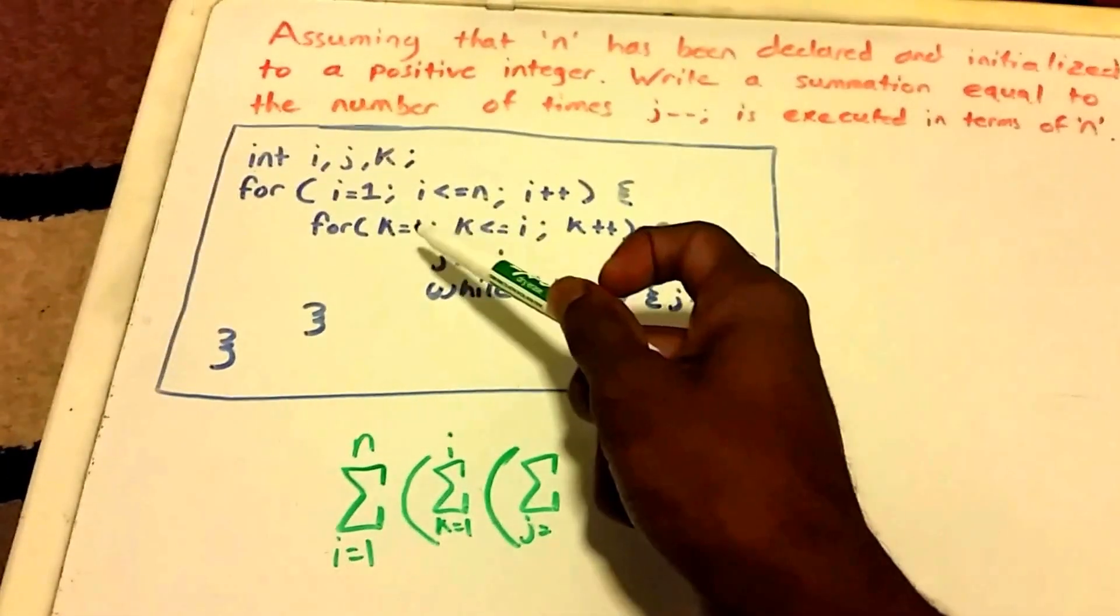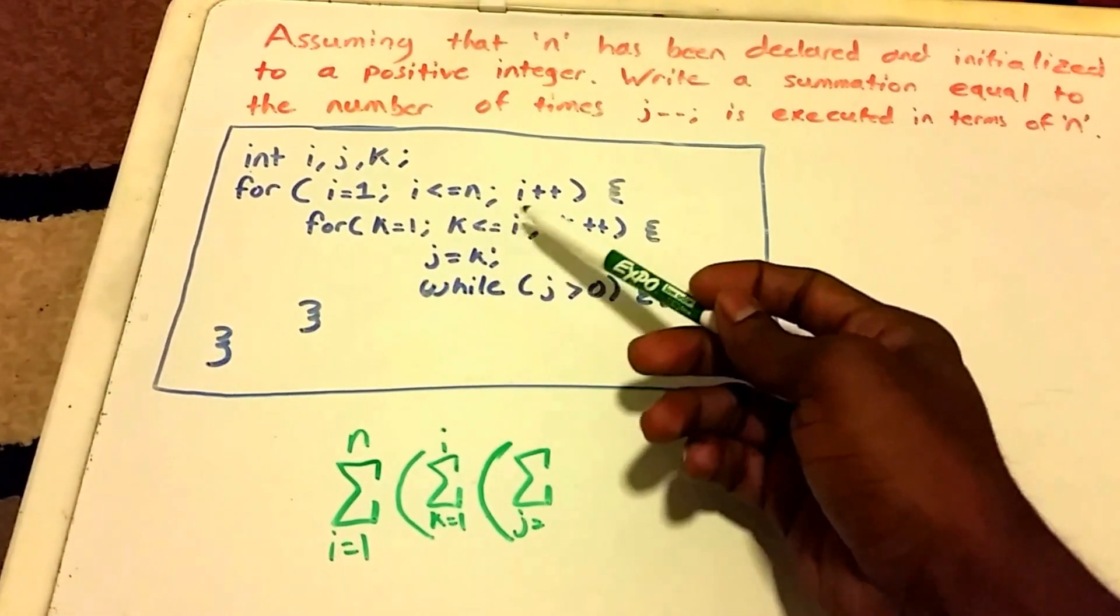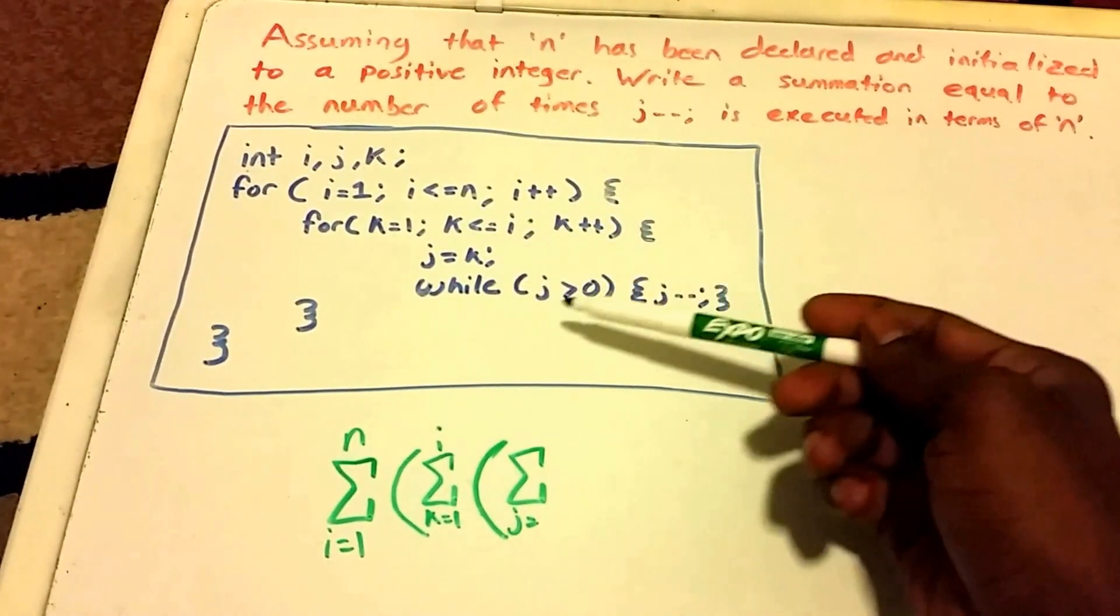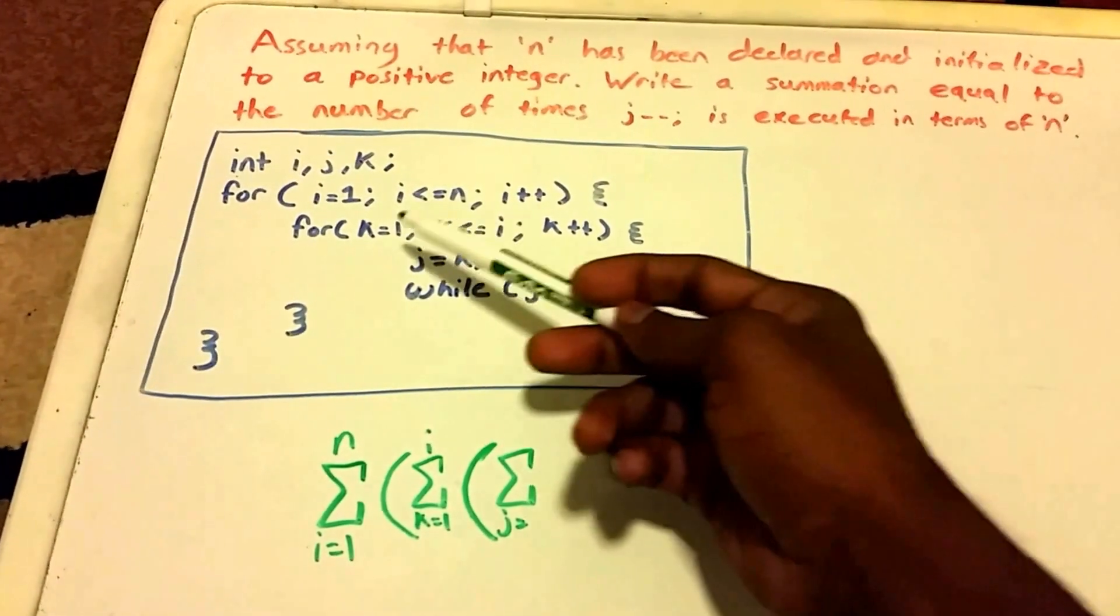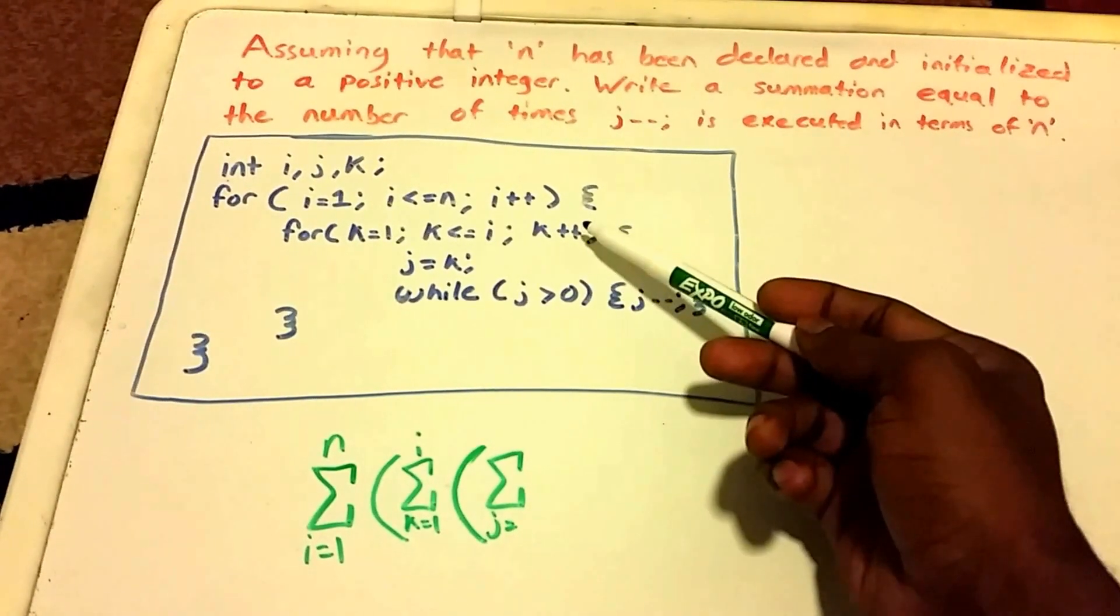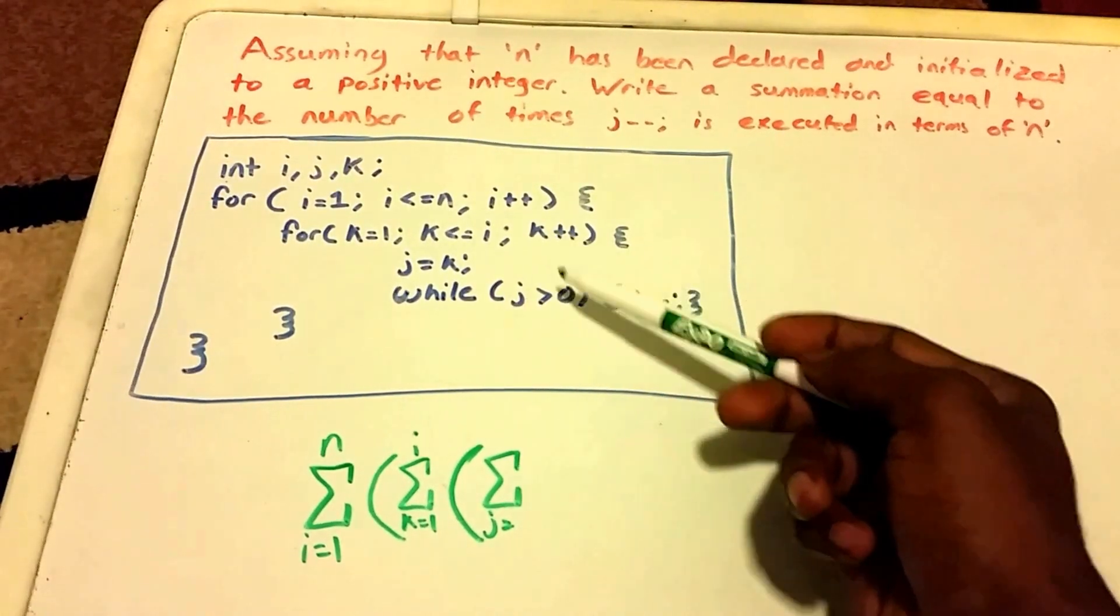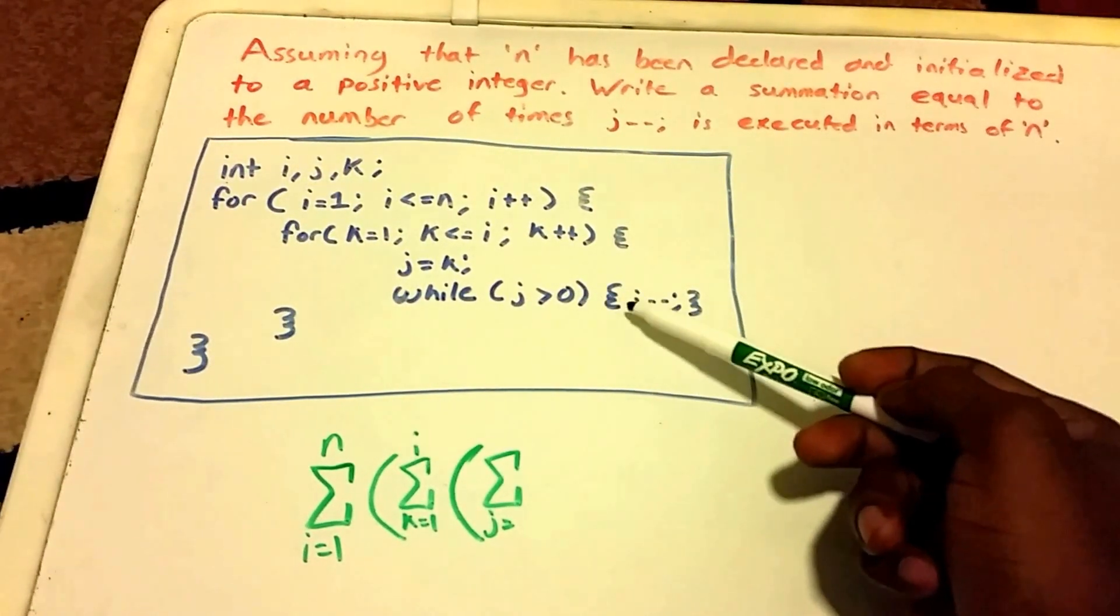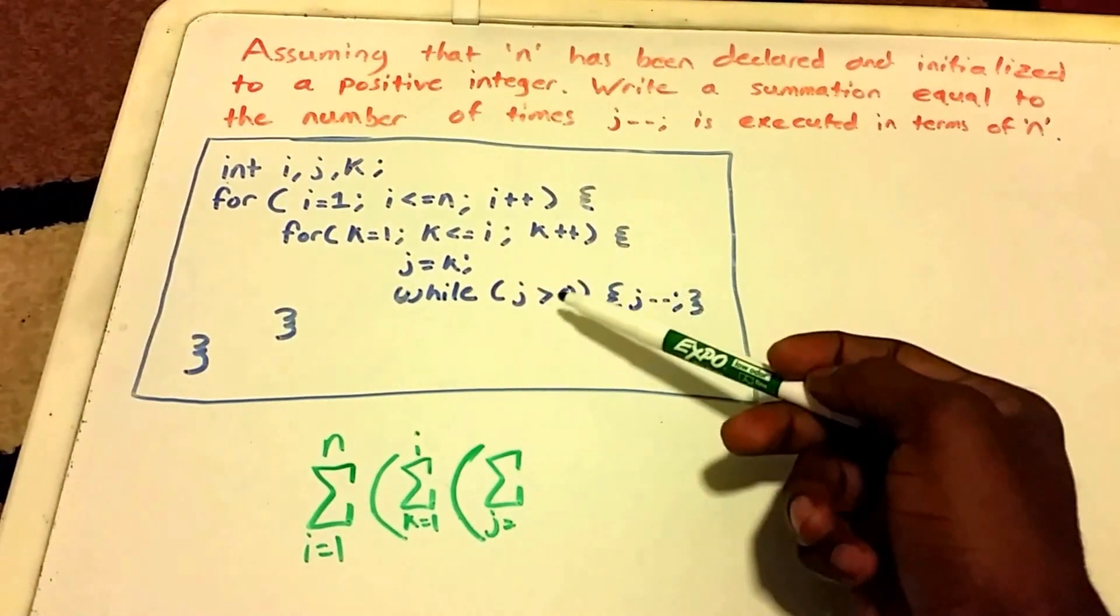And k is initialized at one. So let's just look through the loop here, this inner loop. So if j equals one, then our while loop is just going to run one time. So then our k is going to increment by one, so it becomes two. So then j equals two, and it's going to run two times until our j value's less than or equal to zero.